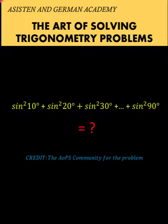Hi everyone, here is our math problem for today. We are given this trigonometric expression: sine squared of 10 degrees plus sine squared of 20 degrees plus sine squared of 30 degrees, and then continuing the pattern until sine squared of 90 degrees. We want to find the value of this expression. You can pause the video and see if you can solve this problem.